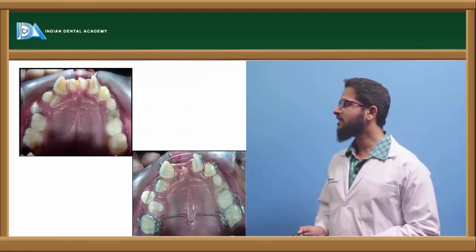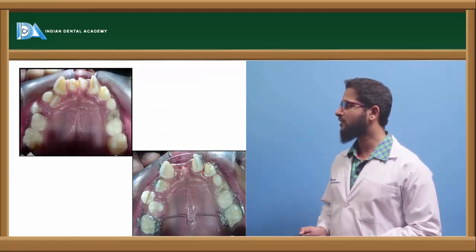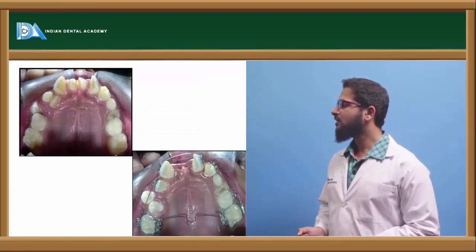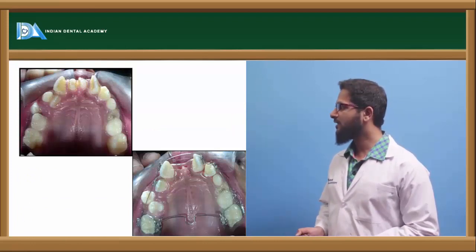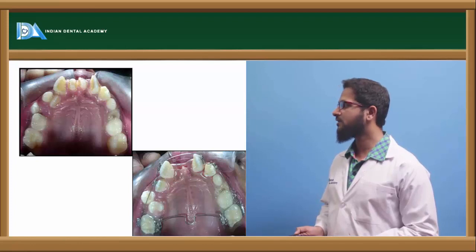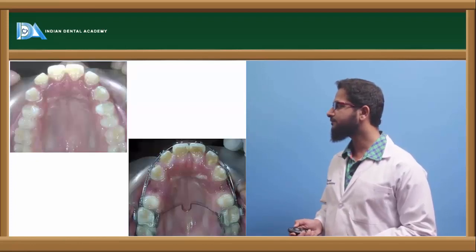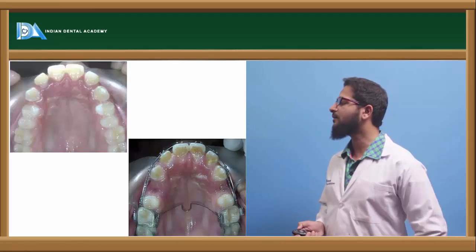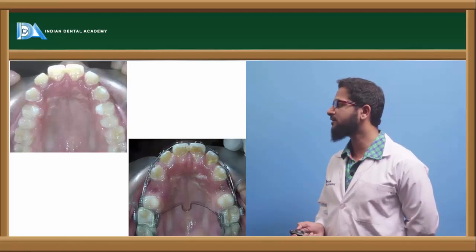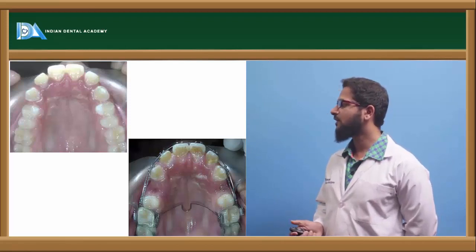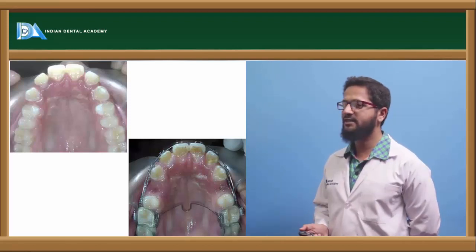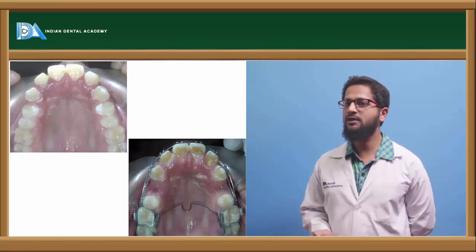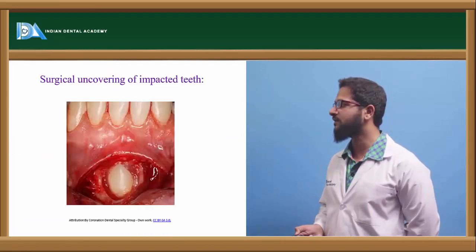Here we can see a condition of crowding wherein anterior teeth are being extracted. These are additional teeth which are present. We can see how the teeth come into proper position after extraction — these are therapeutic extractions done in order to gain space.